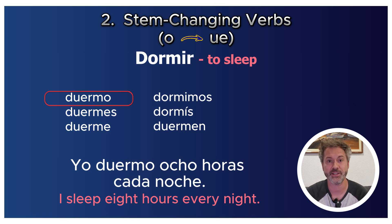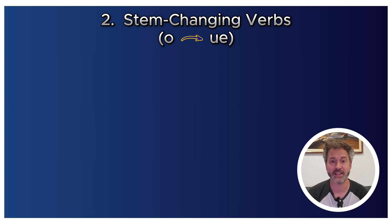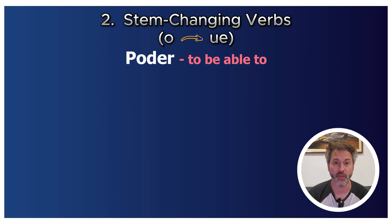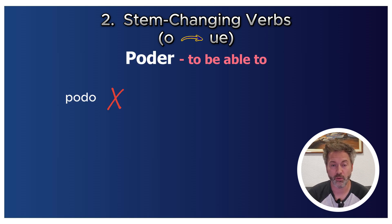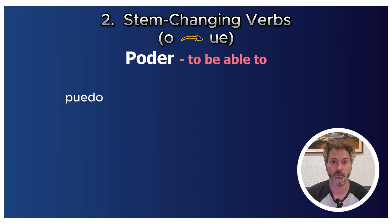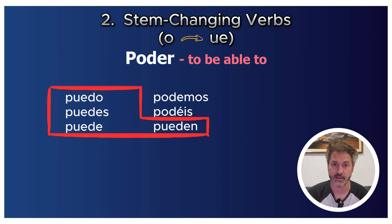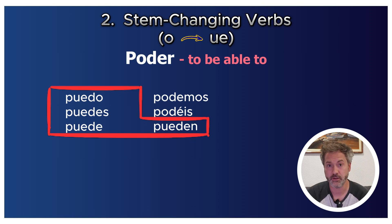Another great O→UE stem-changing verb is poder: the O changes to UE, giving 'yo puedo.' Full conjugation: tú puedes, él/ella/usted puede, nosotros podemos, vosotros podéis, ellos/ellas/ustedes pueden. For example: 'Nosotros podemos hablar tres idiomas' — We can speak three languages.